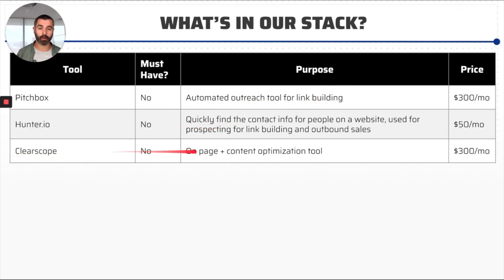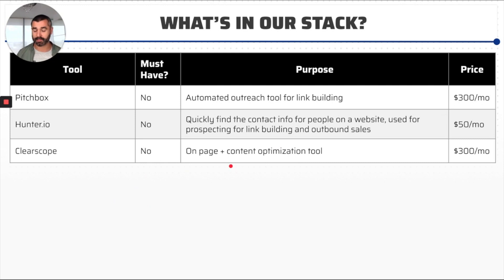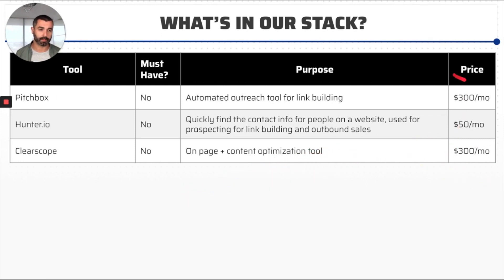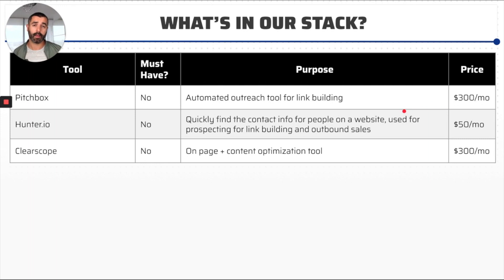The final one on the list is ClearScope. ClearScope is another premium tool we use for content marketing. It allows us to basically optimize the content we're writing in real time from an SEO perspective. It's very powerful, and we talk about it in the content marketing module. It's optional — you don't need it — but once you're operating at scale, it kind of becomes a no-brainer because it takes the place of a person. Same thing with Pitchbox. $300 or $500 a month might seem like a lot, but it pales in comparison to what you pay a person to do that on a full-time salary.